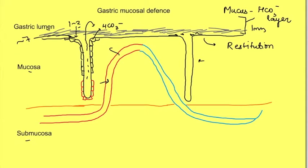Thus there are layers of protection: pre-epithelial formed by the mucus bicarbonate layer, epithelial layer where cells secrete mucus bicarbonate and can perform restitution, plus sub-epithelial protection due to blood flow.